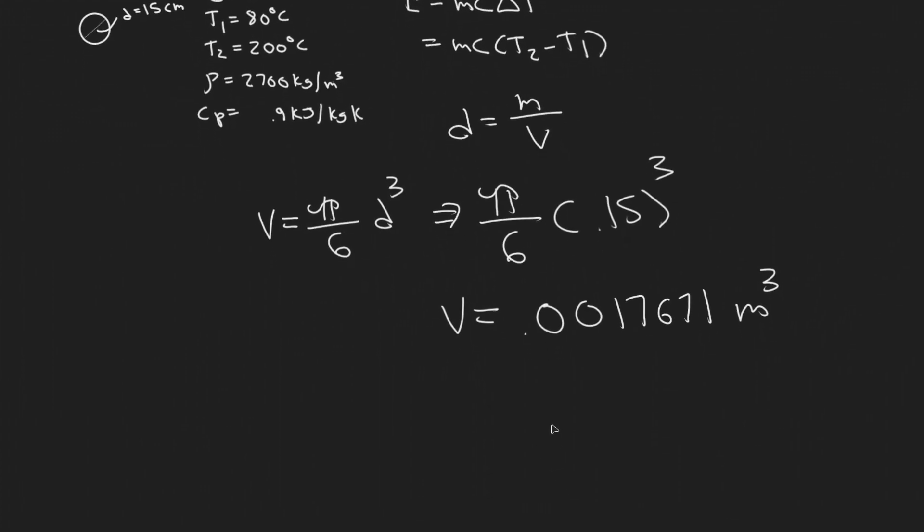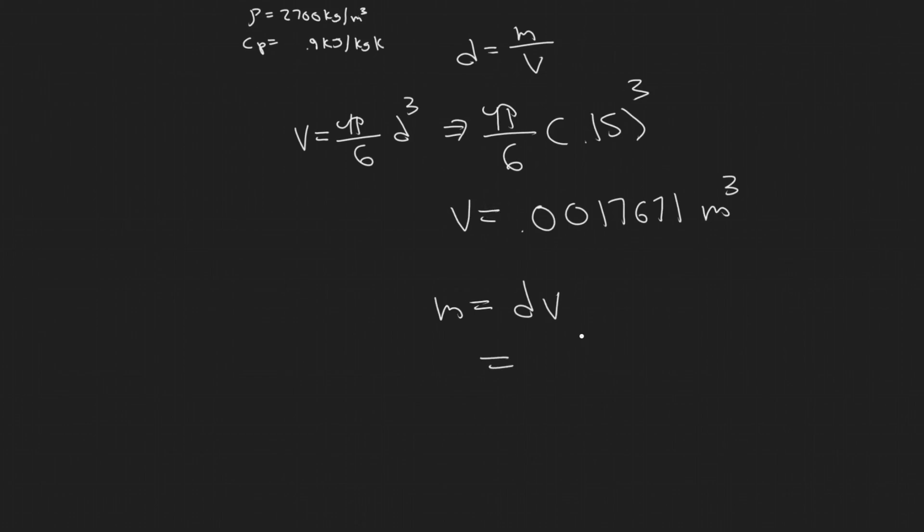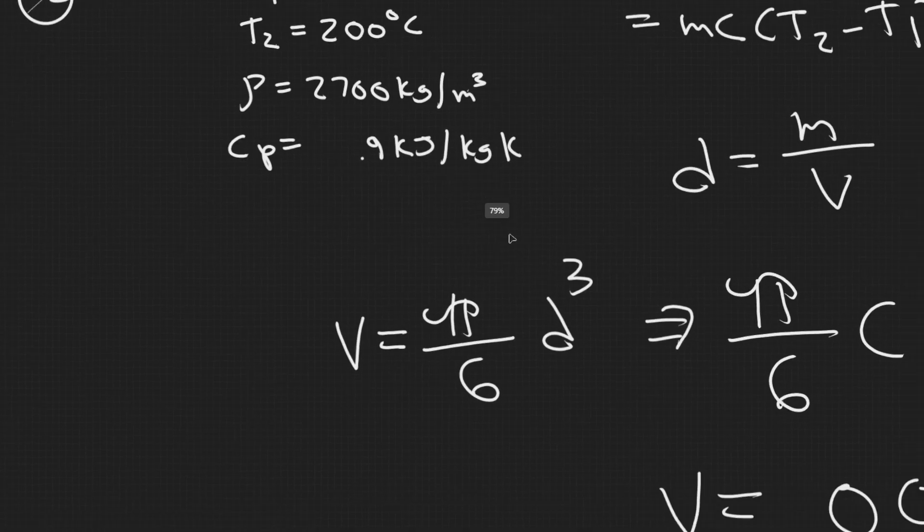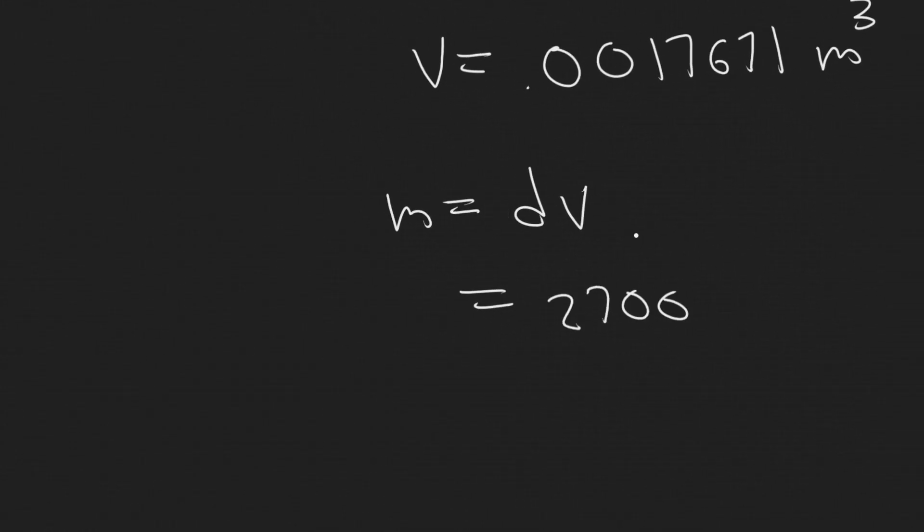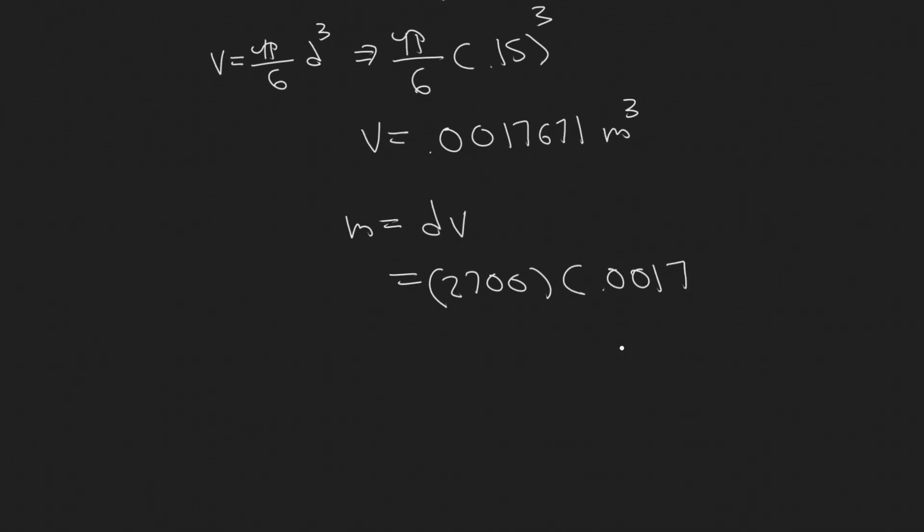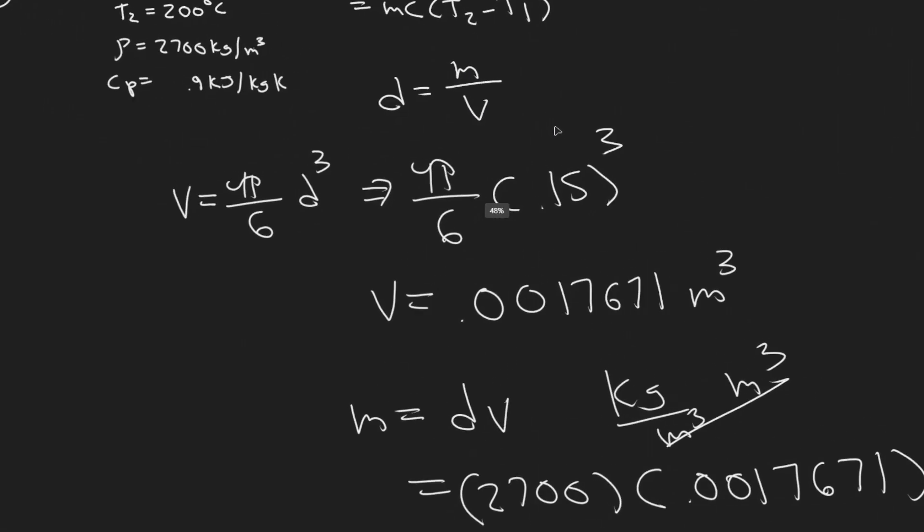So now we have V. If we multiply this by D, it'll give us the mass, so we're just moving this to this side. So I'll just write it out: m equals DV. So it's going to be equal to the density, which is given to us right here, so 2,700, and then multiply that by this value, 0.0017671. Let's see what that is. So m equals 4.77129. So we'll just say 4.771. The units are kilograms, since this was in kilograms per meter cubed, and then you just multiply it by meter cubed. So now we have the mass. Let's go back up here just to plug it in.